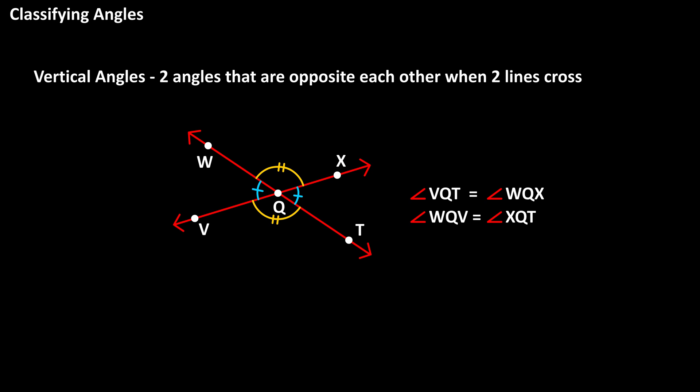We often put this little arc with a tick mark to signify that the angles have the same measurement, and we could use an arc with two tick marks to signify that the other set of angles have the same measurement as one another.